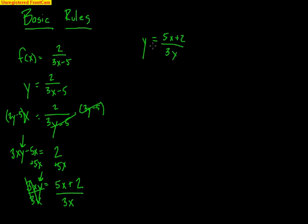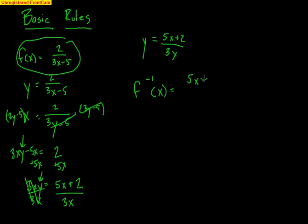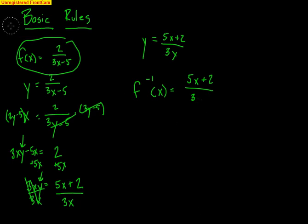So that is the inverse function. Since I switched x's and y's and solved, I'm going to now classify this as an inverse function. So the inverse function of this original function is (5x plus 2) divided by 3x. Let me fix that — it should be a 3x right there, it may look a little funny. So 5x plus 2 all divided by 3x would be the function.